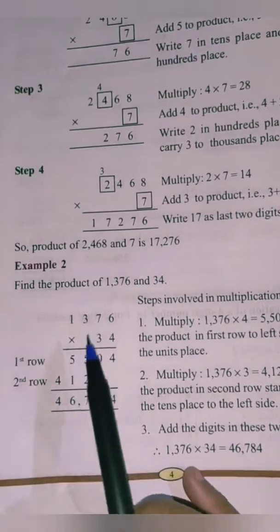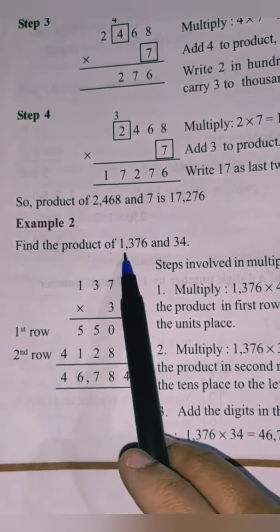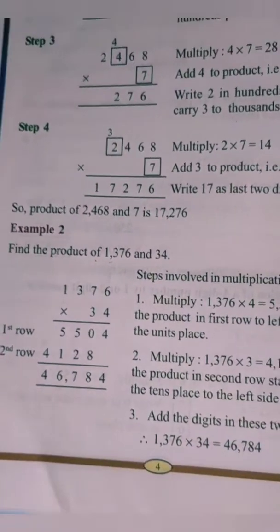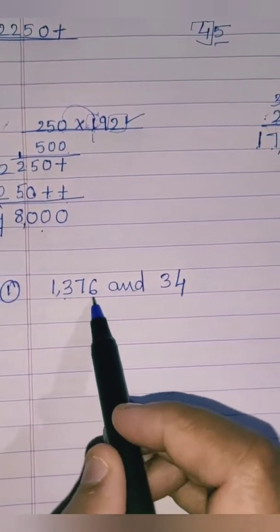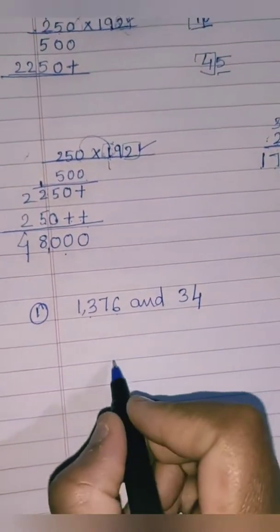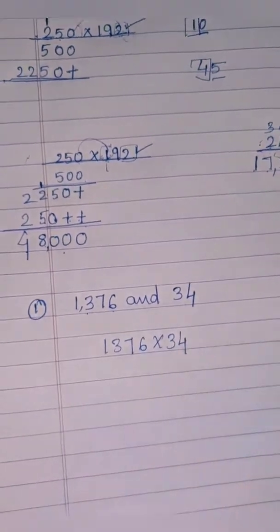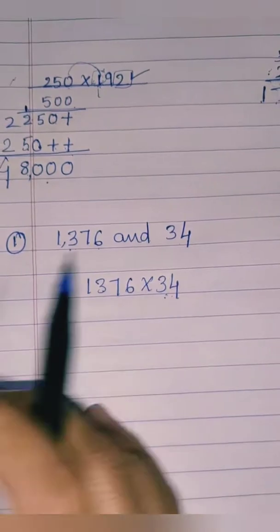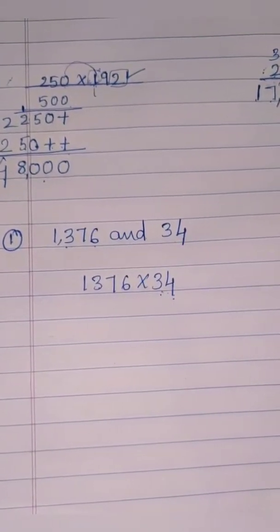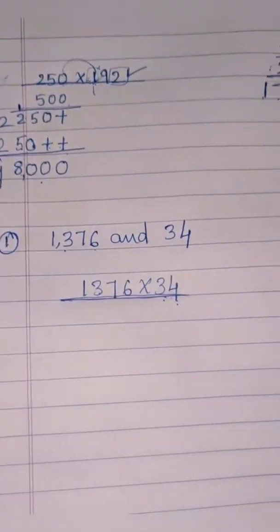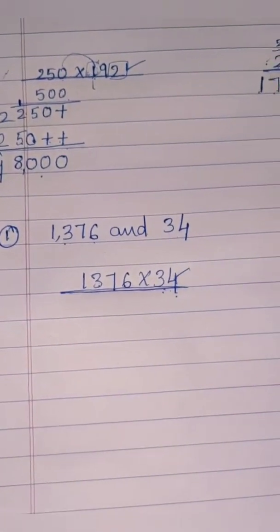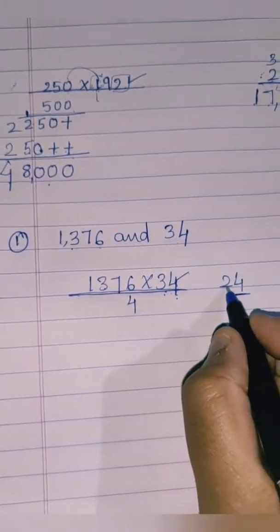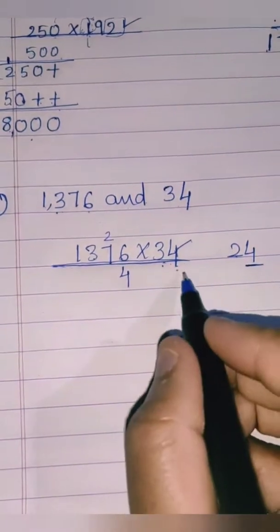Let's take another example: find the product of 1376 and 34. Here I've written 1376 into 34. We are now multiplying by two digits. Start from the unit digit 4. Four sixes are 24 — write 4 here and carry 2. Next: four sevens are 28, plus carry 2 is 30 — write 0 and carry 3.